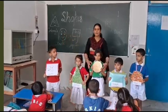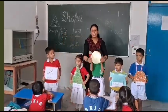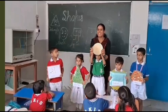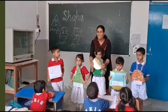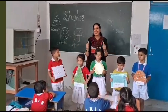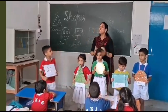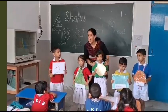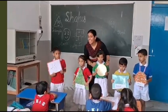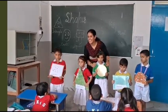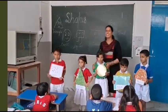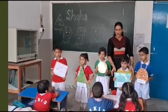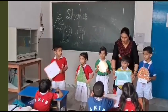Next one is circle. Circle has no corners and no sides. How many sides in the circle? Zero. Zero. Very good.